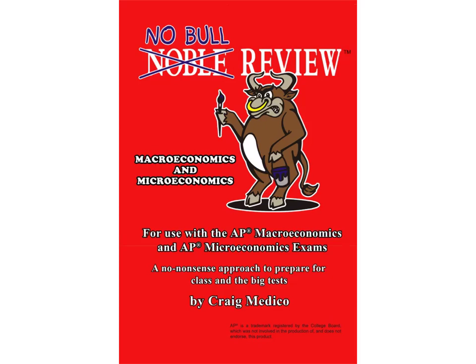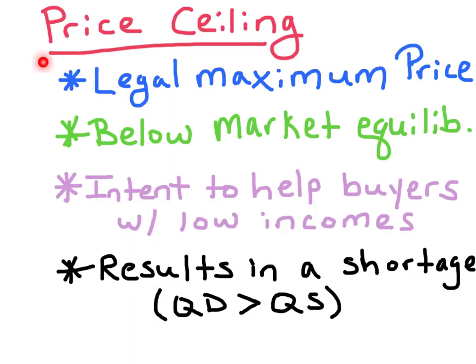Welcome to another Noble Review session for students of AP Economics. Today we're going to talk about price ceilings. A price ceiling is a price control that prevents the price from reaching its equilibrium. It's a legal maximum price set by the government. In order for it to be effective, it must be set below the market equilibrium.